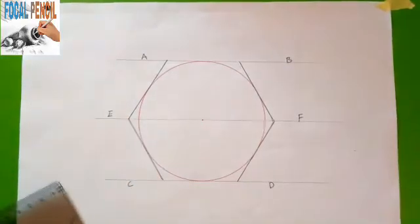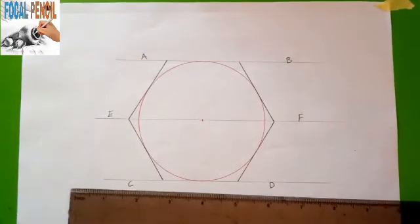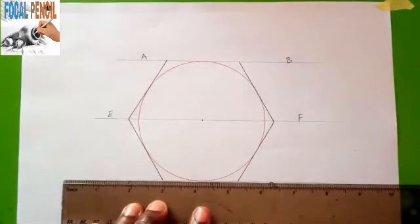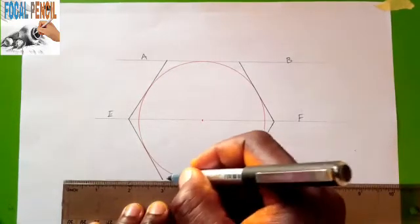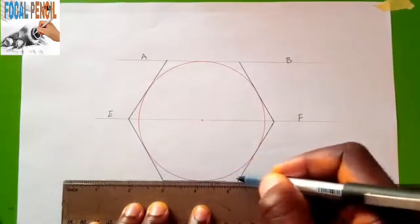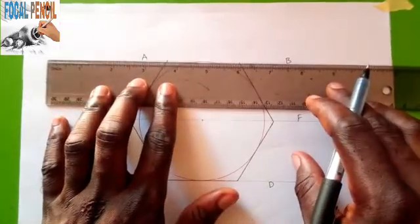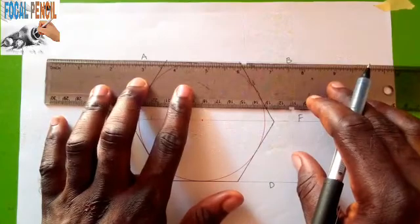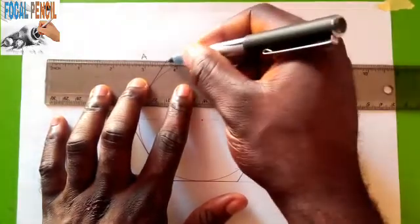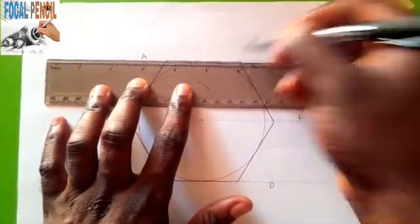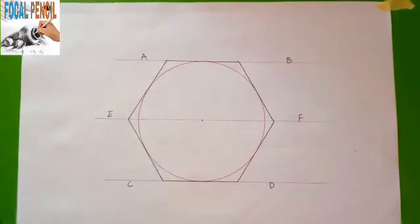Now after drawing this, you now join the initial lines. This is your hexagon around the circle. Please remember to subscribe. I love you guys all.